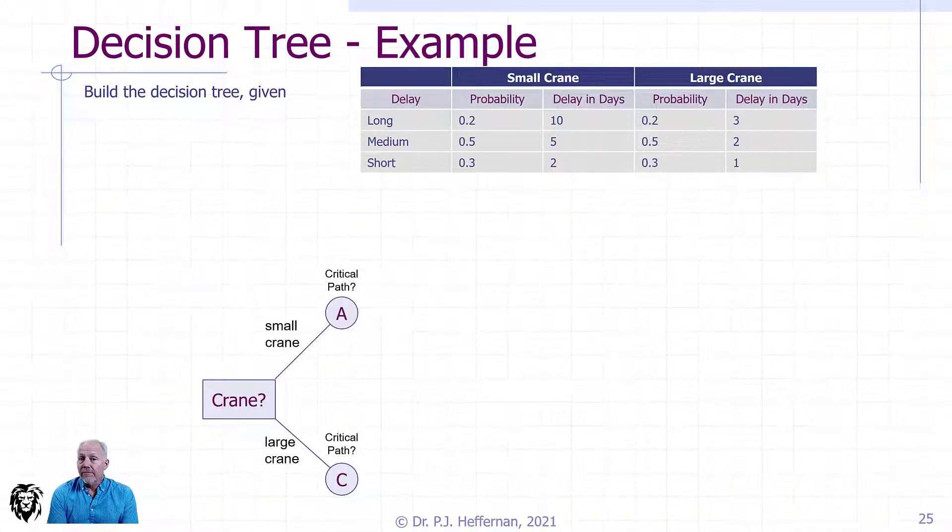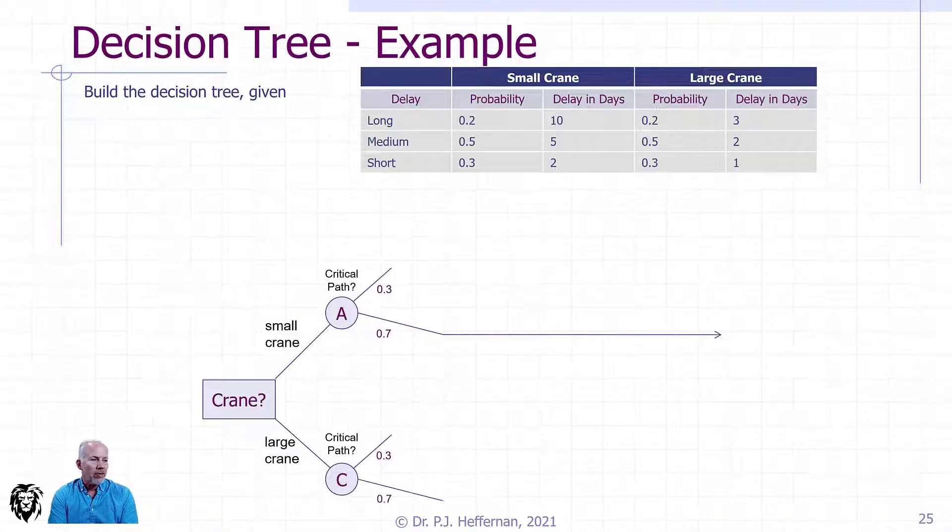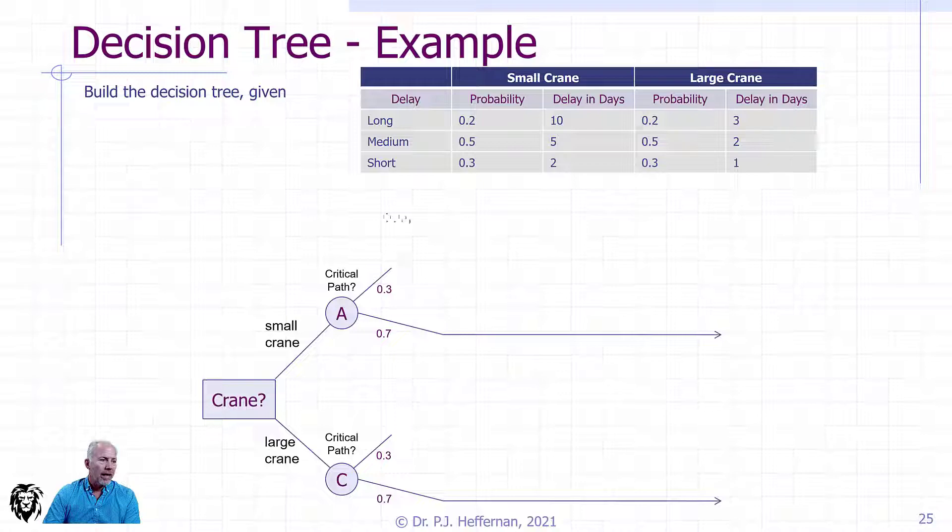Then we have a probability impact. Is it on the critical path or not? That will matter because if we're not delaying the project, we're not going to realize the impact of that $5,000 a day. There's a 30% chance it would be on the critical path, so we insert 0.3 as the probability. And a 70% likelihood that we're not on the critical path, so that takes us off to the end of that particular arm.